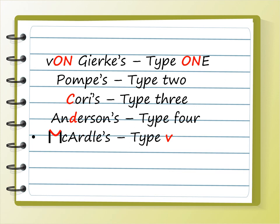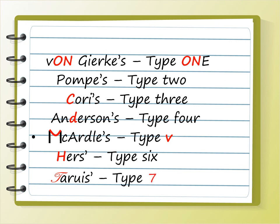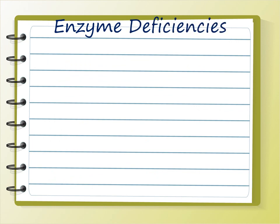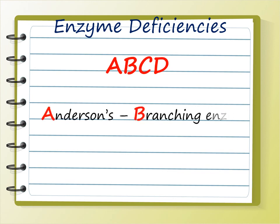The next one is McArdle's — in the letter M, the upper part looks like a V or Roman numeral 5, so it is type 5. Hers' — the letter H stands for 'hexa,' which is 6, so it is type 6. Tarui — the letter T somehow looks like 7, so it is type 7. So: Von Gierke type 1, Pompe type 2, Cori type 3, Anderson type 4, McArdle type 5, Hers type 6, and Tarui type 7.